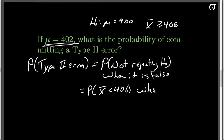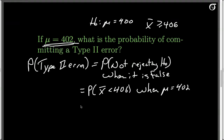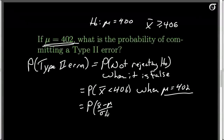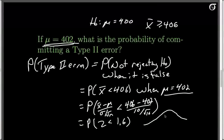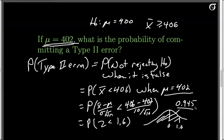We can convert to a standard normal using the true mu of 402. The probability that x-bar minus mu over sigma over root n is less than (406 minus 402) over (10 over root 16) equals the probability z is less than 1.6. Plotting the standard normal with 0 and 1.6, the area to the left is 0.945. That's a very large number — we'll be making many type 2 errors because the true mean is only slightly bigger than the hypothesized mean.